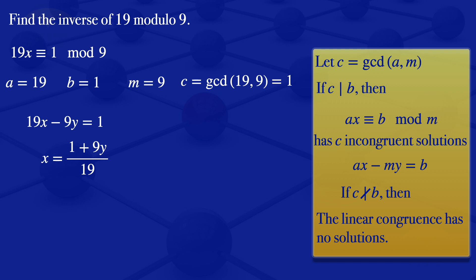So we can start when y equals to 0. If we substitute y equals to 0 here, we would have x is equals to 1 divided by 19. This is not an integer, it's not the solution that we are looking for.